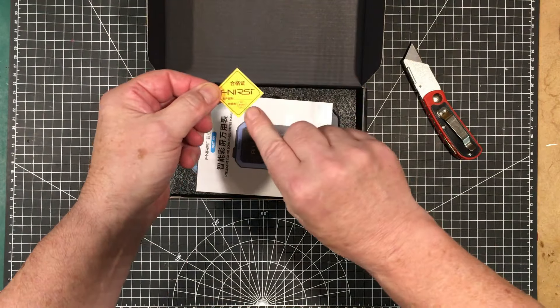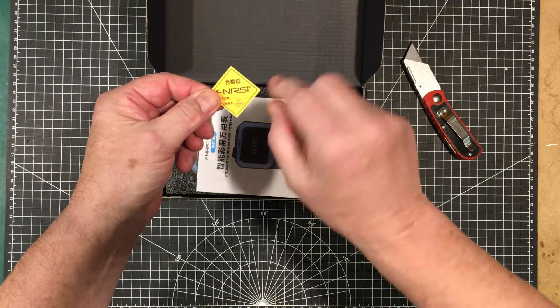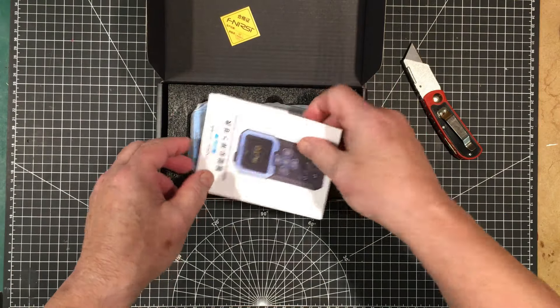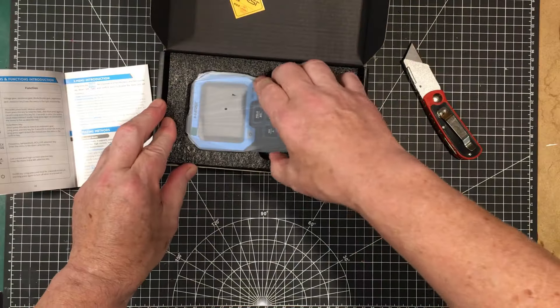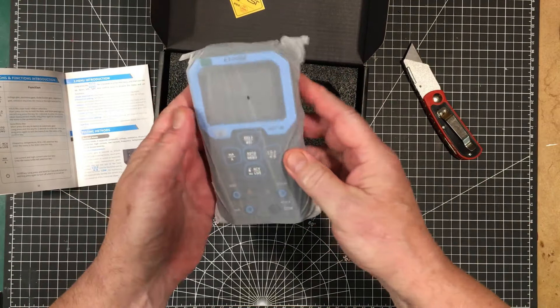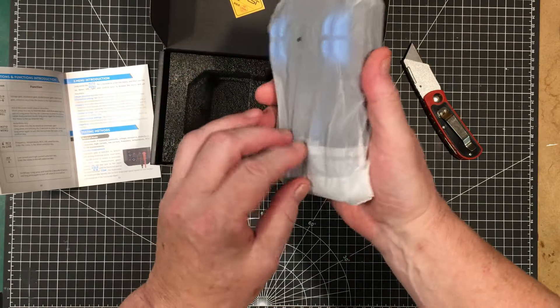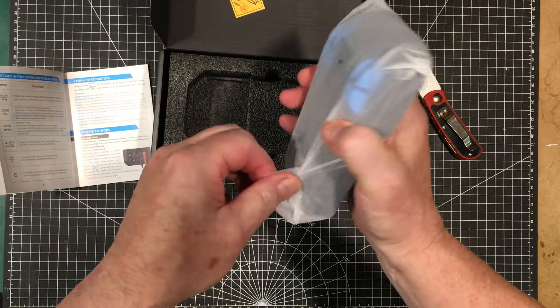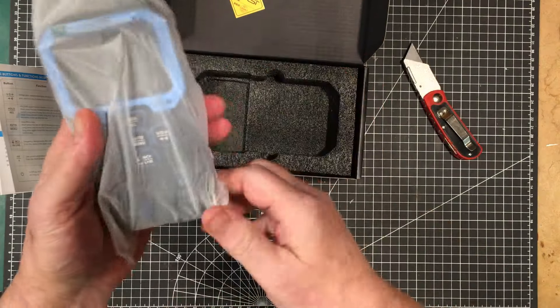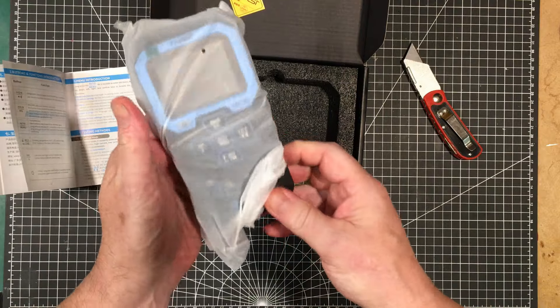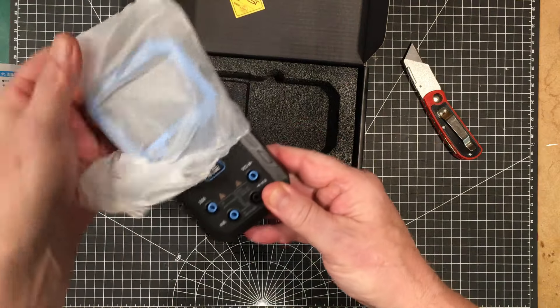Now all the Fenirsi products come with this little tag here, passed QC, and comes with a manual. Here's the meter itself. Oh, it's more compact than I thought it would be. It's a nice size, not too thick and heavy, and it has a rechargeable battery in it.